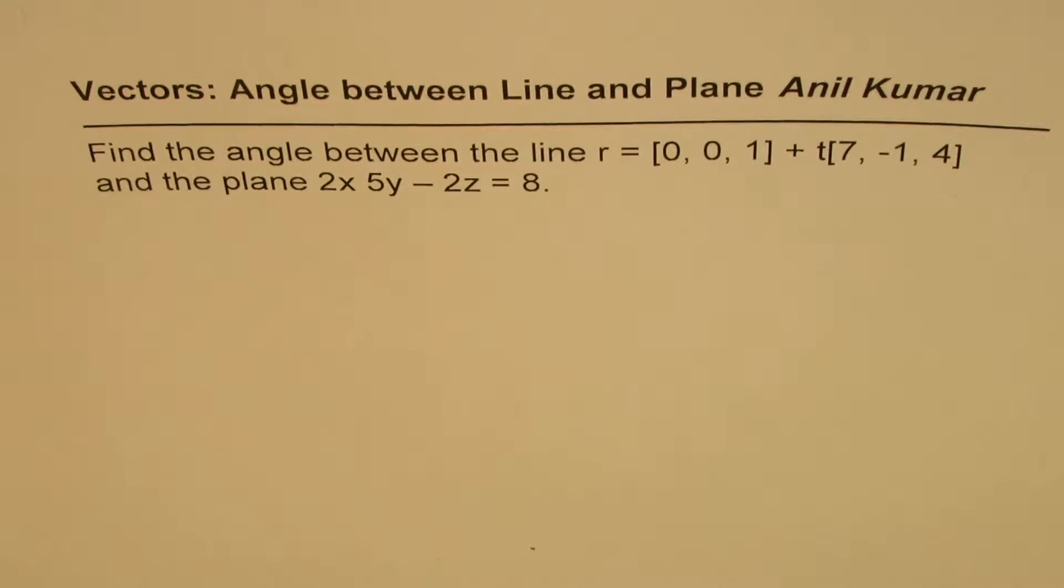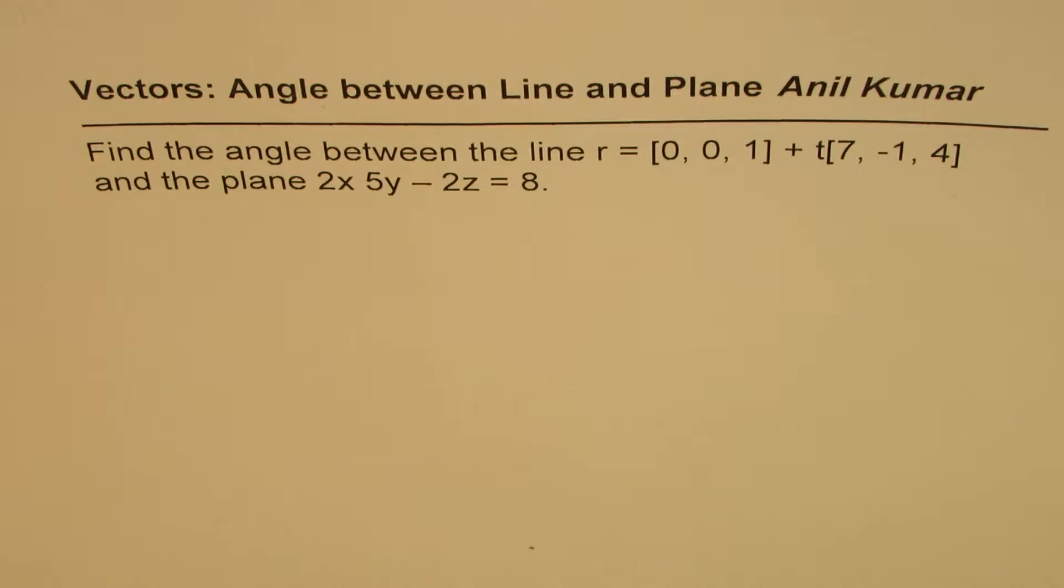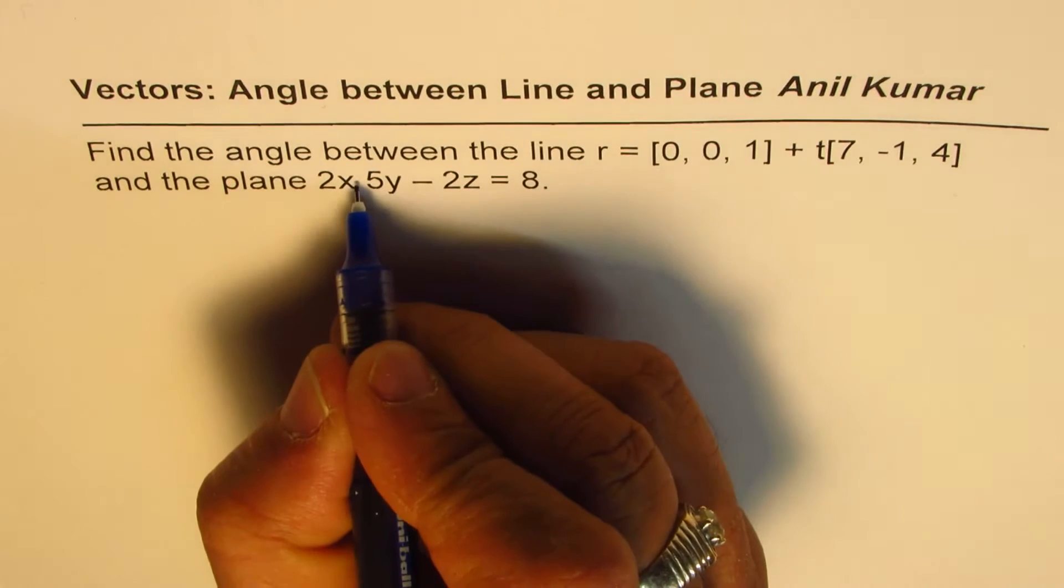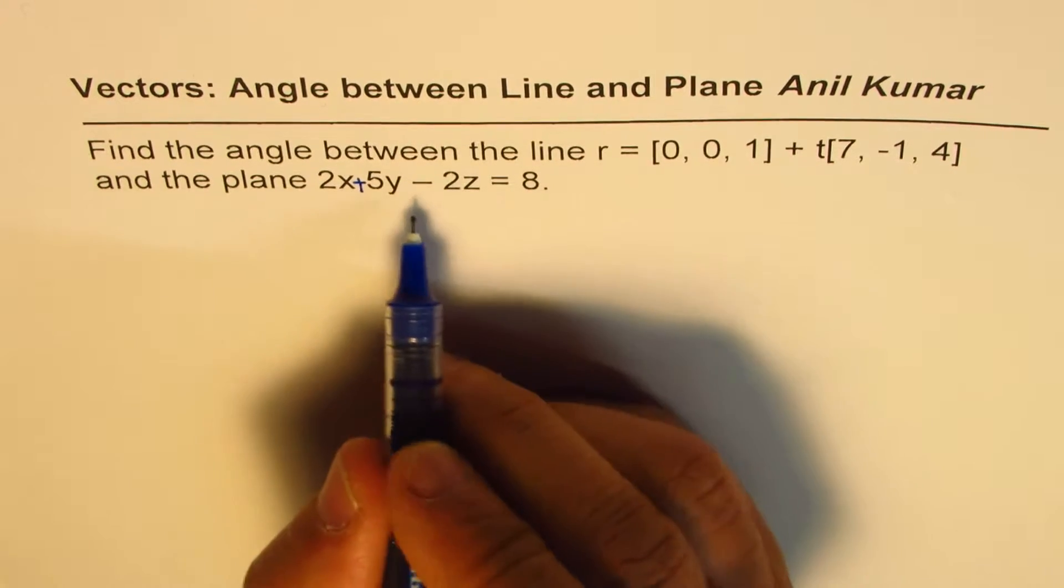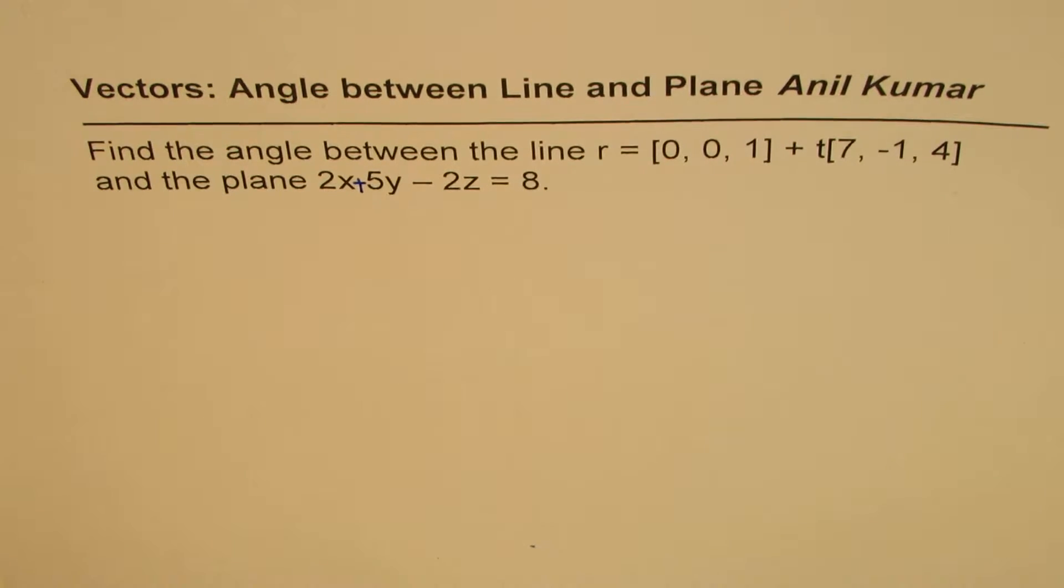I'm Anil Kumar, and in this video we'll find the angle between a line and a plane. The question here is: find the angle between the line r = [0, 0, 1] + t[7, -1, 4] and the plane 2x + 5y - 2z = 8.